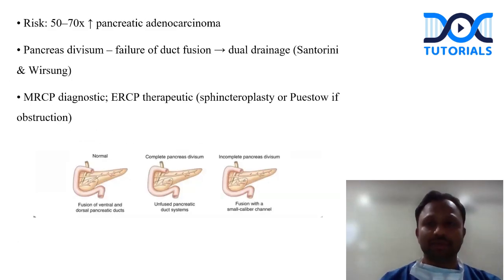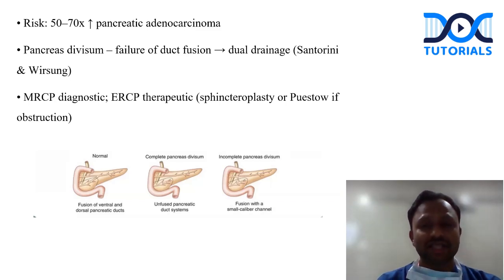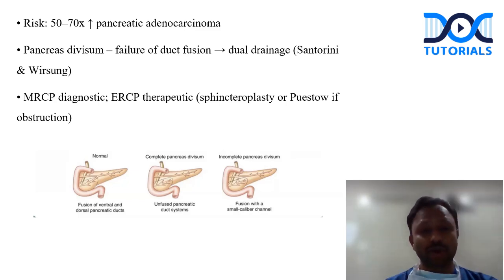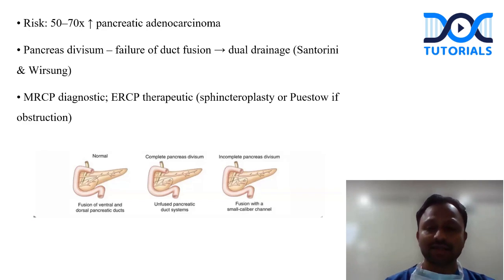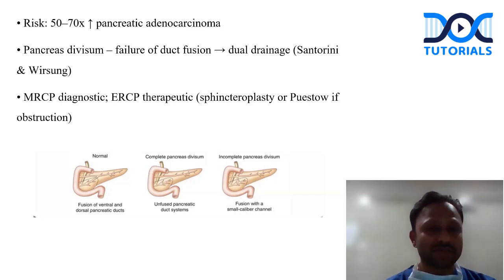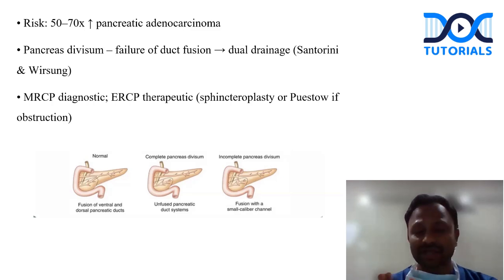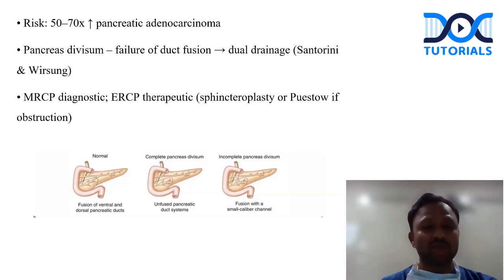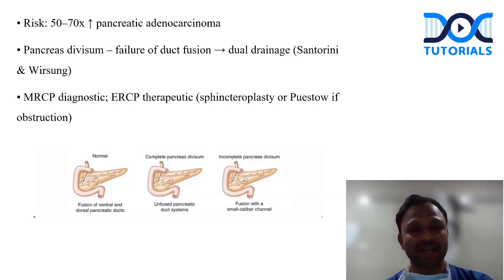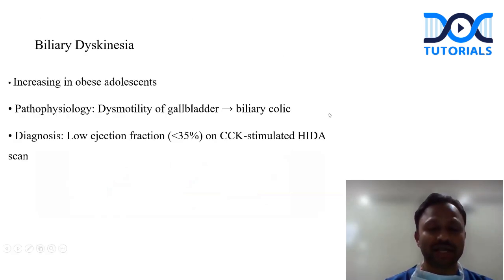The other topic is pancreas divisum, which is due to failure of duct fusion. There is dual drainage from the duct of Santorini and the duct of Wirsung. MRCP is diagnostic for pancreas divisum and ERCP is therapeutic — we perform a sphincteroplasty. Most of these cases present with chronic obstruction. So with regards to recurrent pancreatitis, two things to keep in mind: pancreas divisum as an anatomic abnormality, and hereditary pancreatitis where PRSS1 gene mutations are relevant.